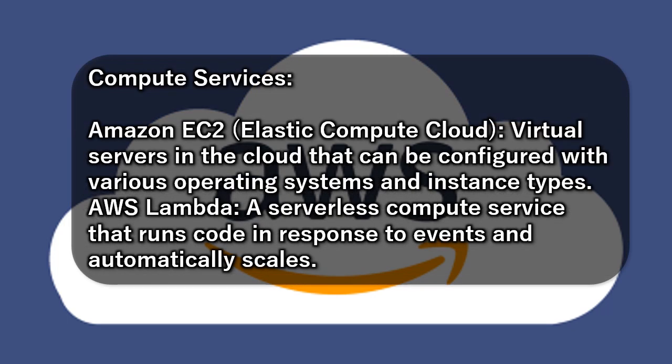Compute Services: Amazon EC2 (Elastic Compute Cloud) provides virtual servers in the cloud that can be configured with various operating systems and instance types. AWS Lambda is a serverless compute service that runs code in response to events and automatically scales.